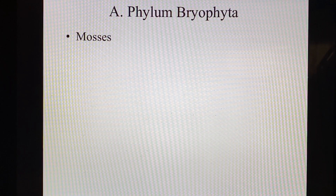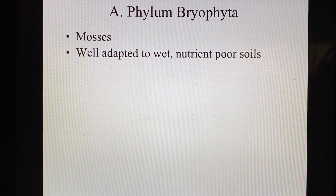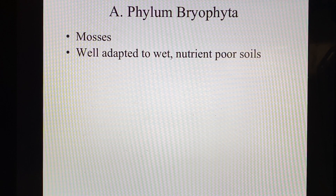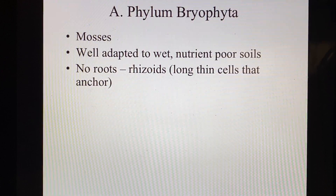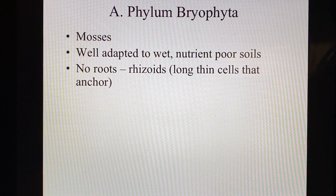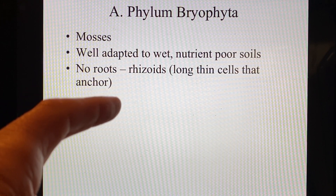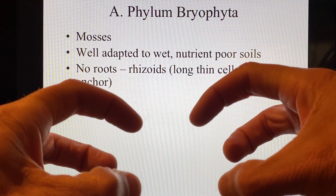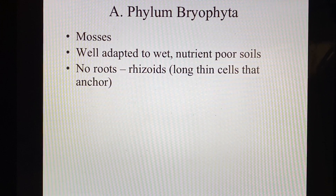These are mosses — all of the mosses are in this phylum. Everybody knows what moss is. Mosses are well adapted to wet, nutrient-poor soils. In fact, sometimes they don't even need soil — these are super tough plants, really small. Remember, they can't move water. They have no roots; in place of roots they have root-like structures called rhizoids. They're long, thin cells, kind of like microscopic spooky fingers that extend out and grab onto things, and they actually anchor the moss to whatever it's growing on.